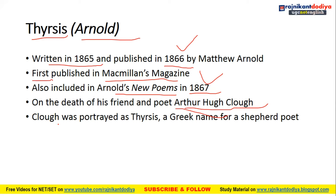In 'Thyrsis,' Clough was portrayed as the character Thyrsis by Matthew Arnold. Thyrsis is a Greek name for a shepherd-poet, and Arnold used this character to represent his friend Arthur Hugh Clough.